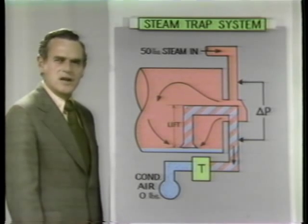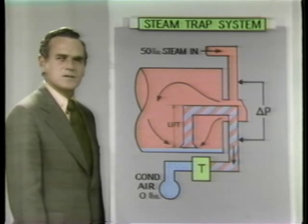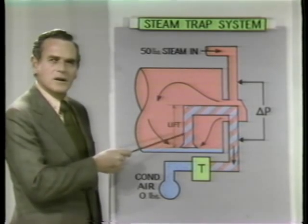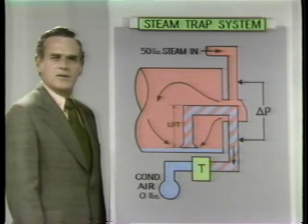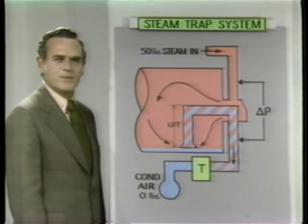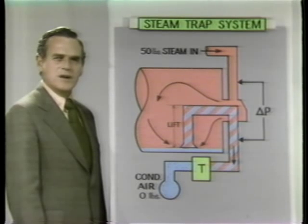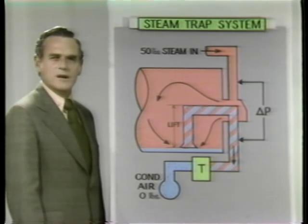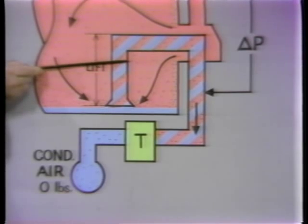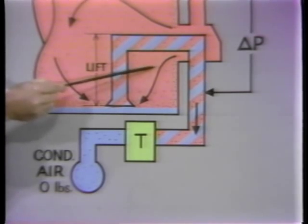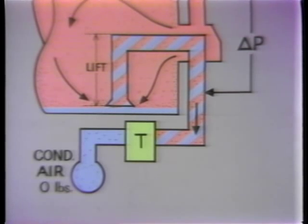On the other hand, a steam trap on a siphon drainage system, such as a rotating dryer, becomes a victim of its own design. Traps are designed to close in the presence of steam and open in the presence of condensate. Condensate is being lifted up the siphon pipe in one of two ways. In a flooded dryer, a solid column of water enters the siphon pipe. Since the siphon is totally steam-jacketed, some of the condensate inside flashes back to steam before reaching the trap.